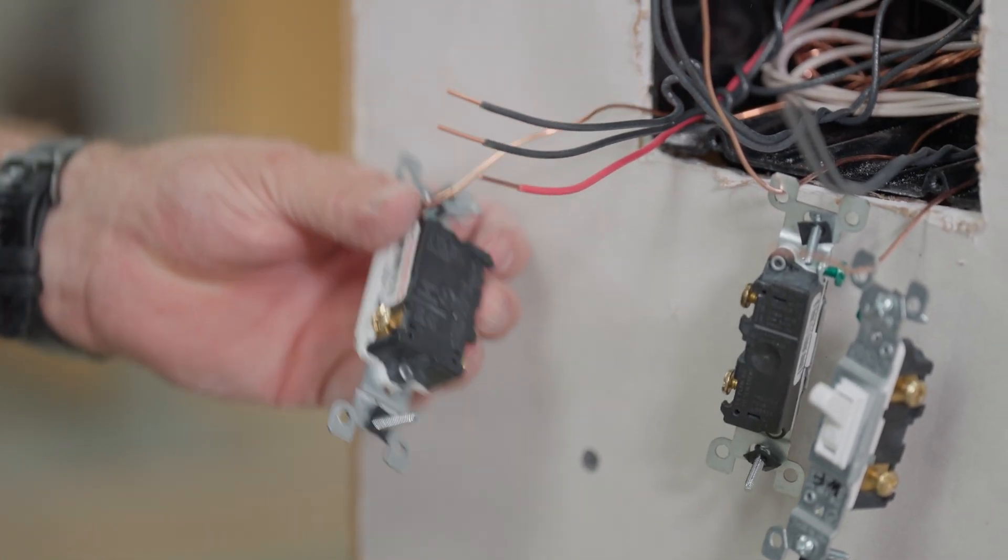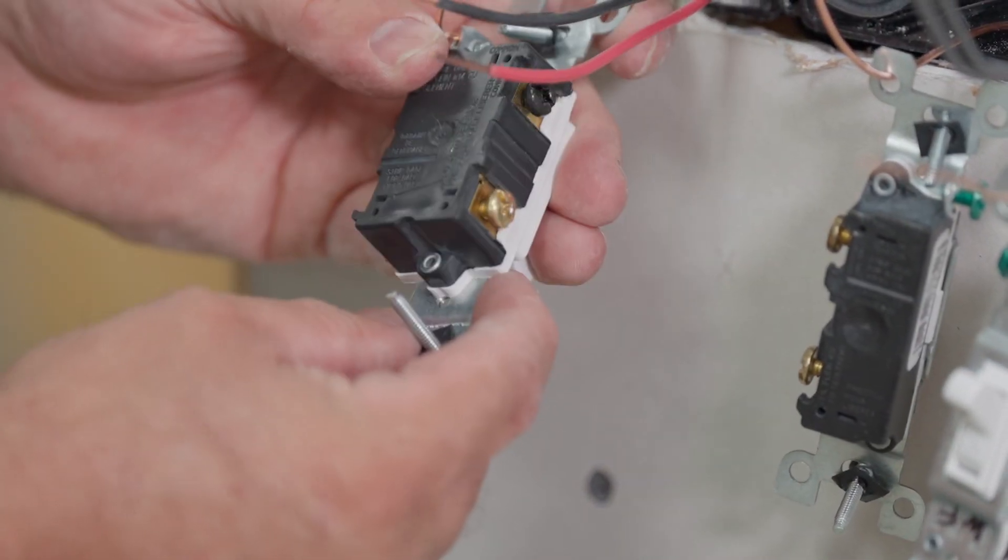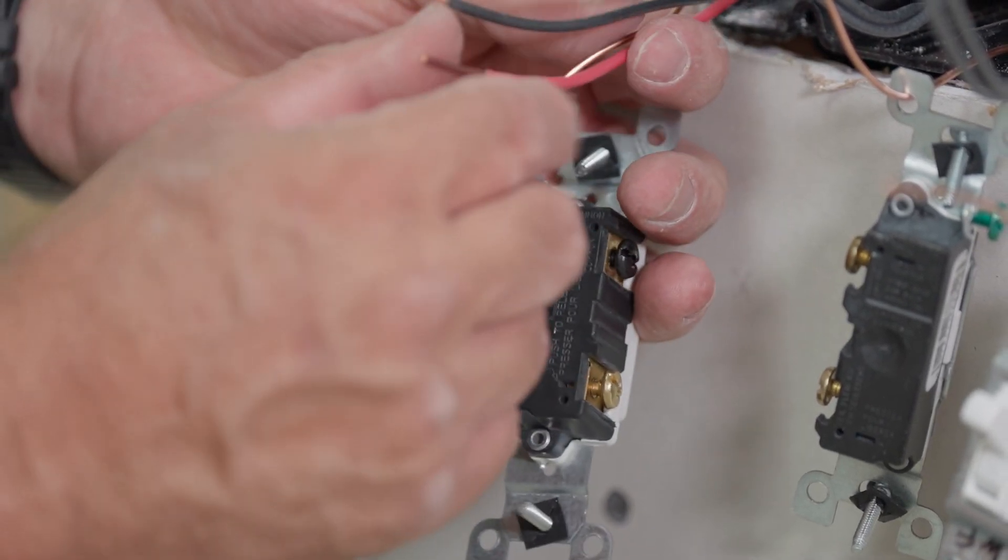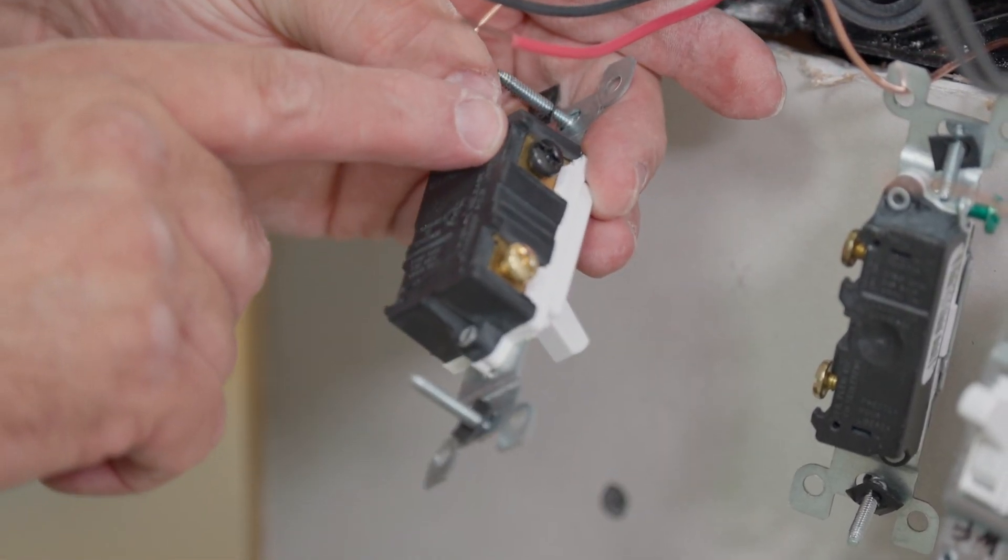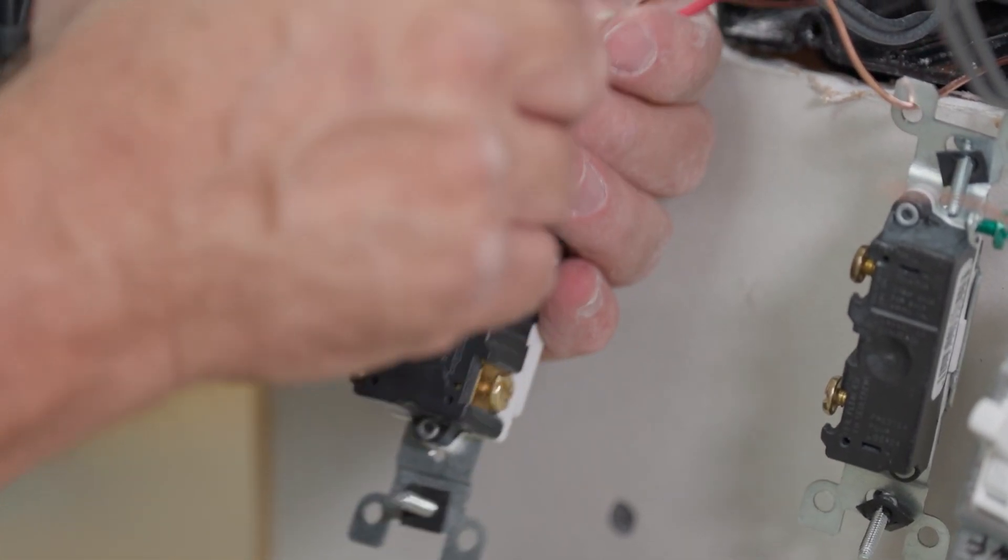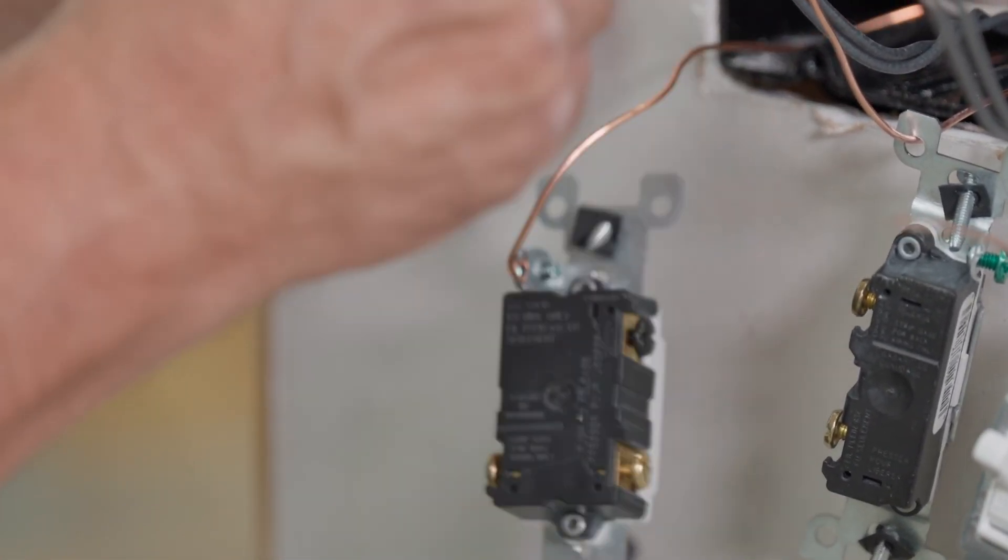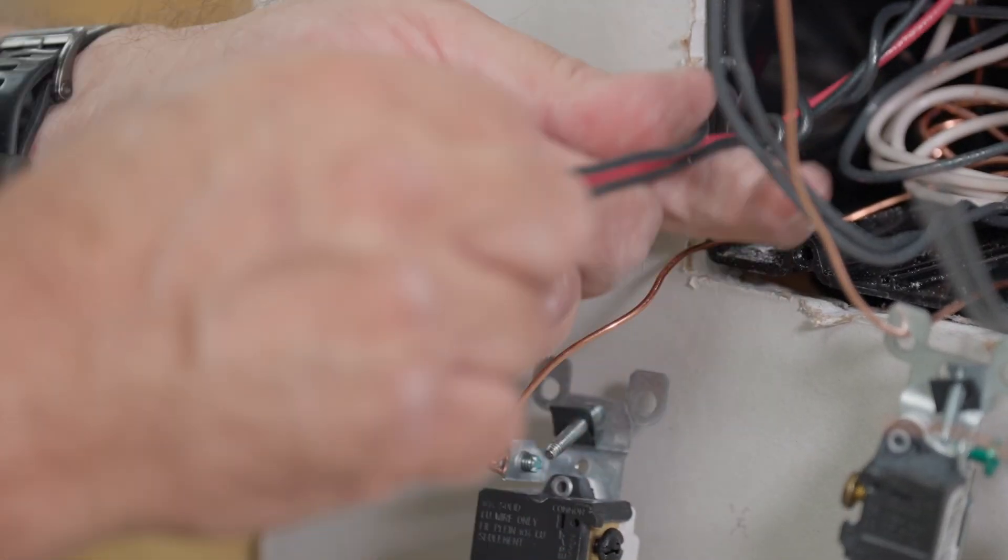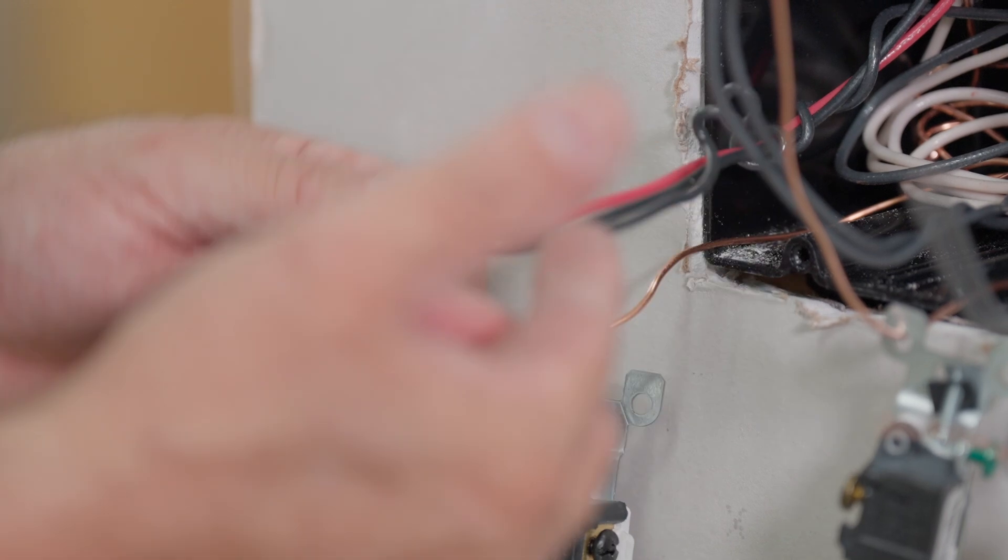Now this is a three-way switch. If you look at the back of this switch, you'll see two brass terminals. Those are for the travelers. And then there's the black common terminal. If you look at this, the makeup here, the travelers are here because this wire has been wrapped around and you can see that it's got a little extra twist. This is definitely the common wire.